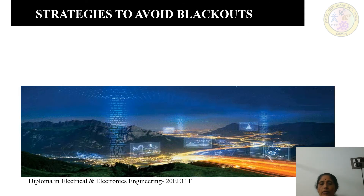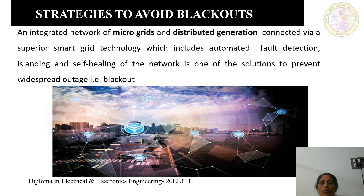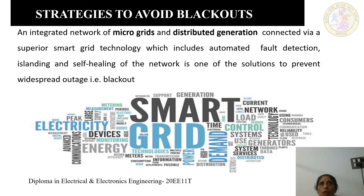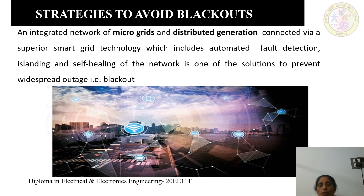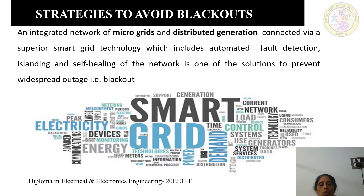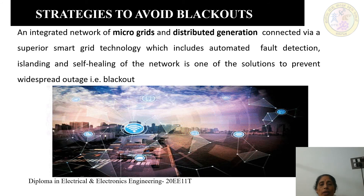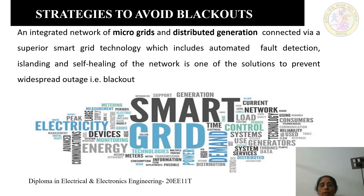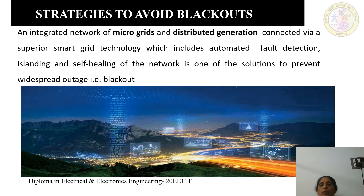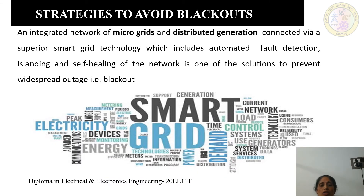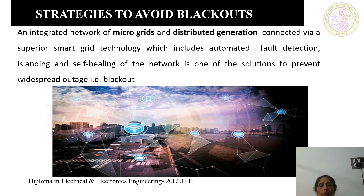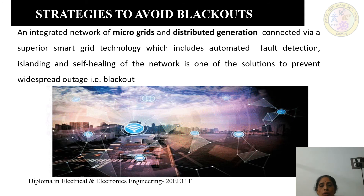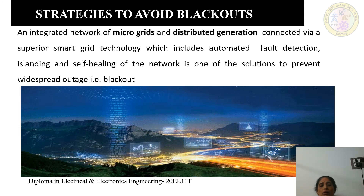Let us look at the strategies to avoid the blackout. In the last session, we saw that blackouts cause multiple problems in the medical field, transportation field, and communication fields. So, we want to avoid blackouts. One strategy is to make use of an integrated network of microgrids and distributed generation connected via superior smart grid technology, which includes automated fault detection, islanding, and self-healing of the network — as one of the solutions to prevent the widespread outage that is the blackout.